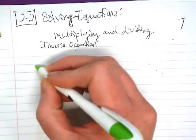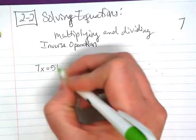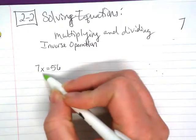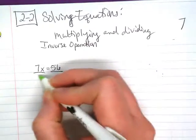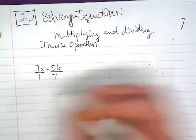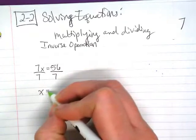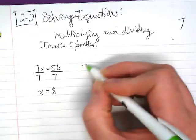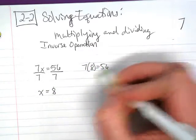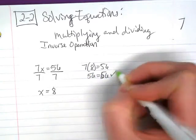We're going to start off with the example of 7x equals 56. We're seeing multiplication, so we're going to divide by 7 to isolate that x. x is then equal to 8. We can check it by saying 7 times 8, does it equal 56? And we see that it does check.